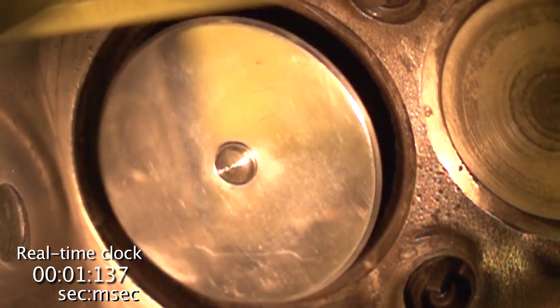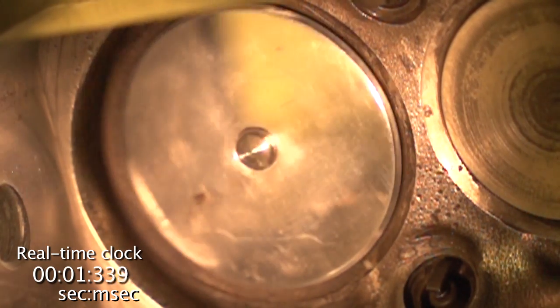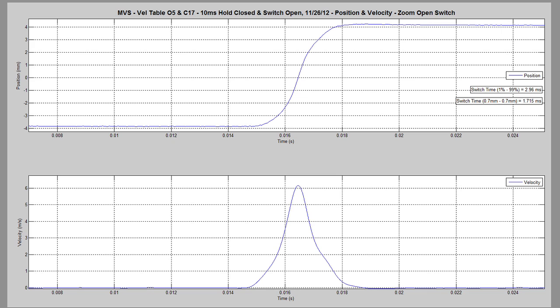Since the valve is controlled digitally, any aspect of the valve's motion can be easily modified. In this video, the controller is tuned to switch in 3.2 milliseconds and land in the closed position with a landing speed of 0.1 meters per second.